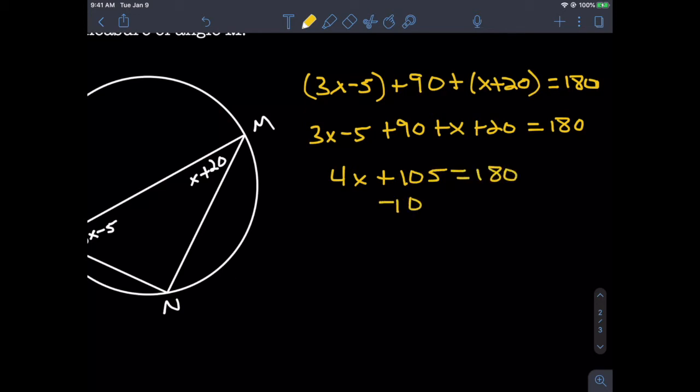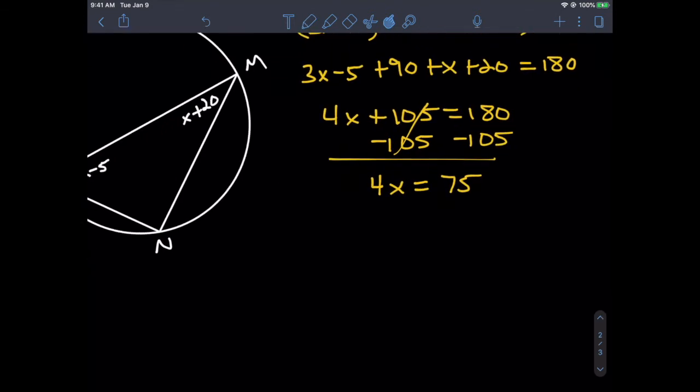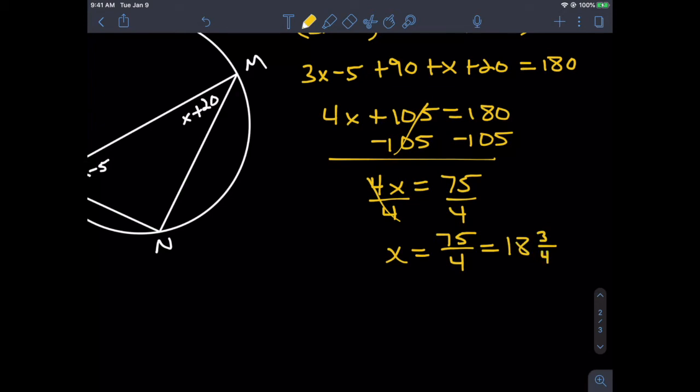Solving for x, we subtract 105 from both sides, giving us 4x = 75. Then we divide by 4. Now, 75 can't be divided by 4 very nicely, so we can leave it as a fraction, write it as a mixed number, or as a decimal. Let's take the mixed number: 18¾.